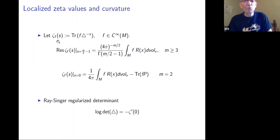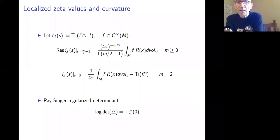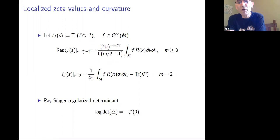If you use localized zeta functions — zeta(s) which is the trace of f(Δ + n)^(-s) — the scalar curvature density in dimensions ≥ 3 is related to the residue of this zeta function at the sub-leading pole m/2 − 1. At dimension two, the formula is different: the value of zeta at s = 0 gives you the scalar curvature density. The localized zeta gives you the scalar curvature density — you have to subtract the trace of the projection into the kernel of the Laplacian. Zeta function formulation is very good — for example, the regularized zeta determinant is negative zeta-prime at zero, since this zeta is regular at zero.